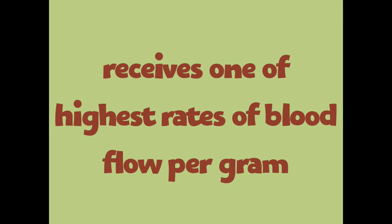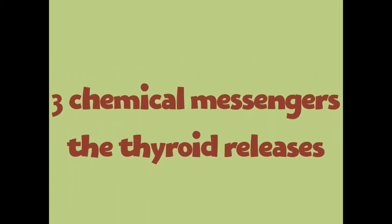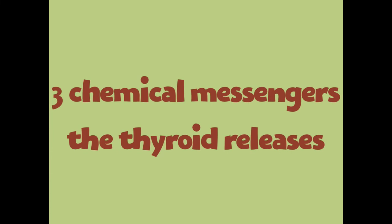The thyroid gland receives one of the highest rates of blood flow per gram of any other endocrine gland in the body. When you consider two things — number one, the function of the thyroid gland, which is controlling just about every cell in the body, and number two, its location very close to the heart — this makes a lot of sense. It controls just about every cell in the body via three main chemical messengers, all released by the thyroid.